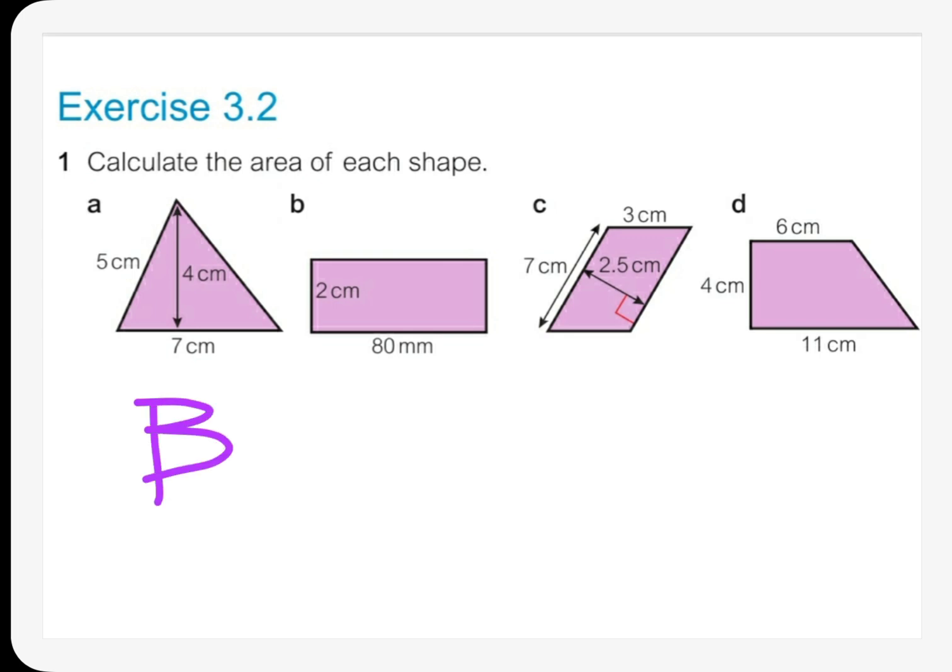The area of a parallelogram is base times height. So it's 7 times 2.5 and it equals—now 7 times 2 is 14, and half of 7 is 3.5. You can use the calculator for that. The answer will be 14 plus 3.5.